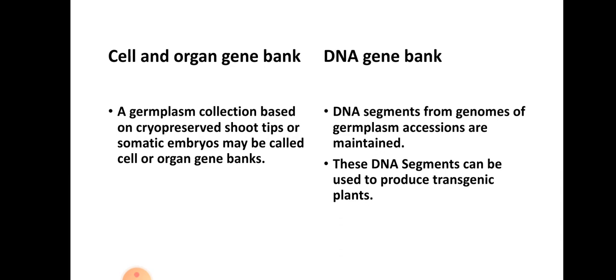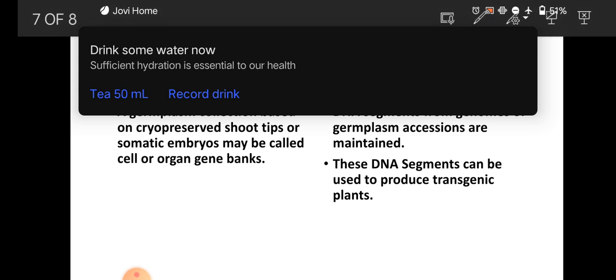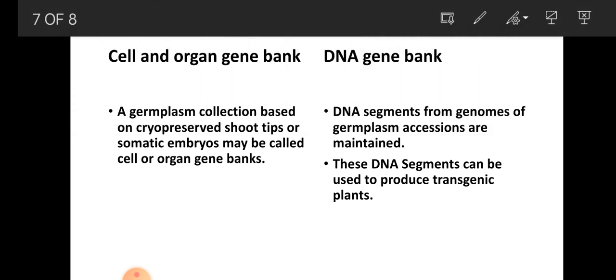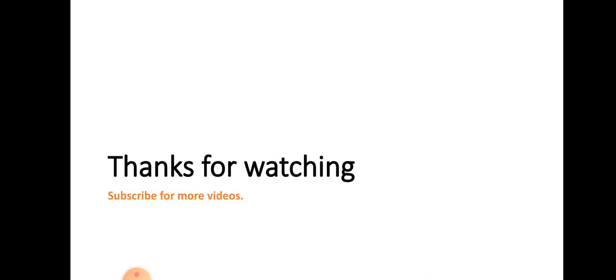In DNA gene banks, DNA segments from the genomes of germplasm accessions are maintained. These may be pure DNA, phage lysates, or cosmid clones. These DNA segments can be used in the future for the production of transgenic or genetically modified crops. That is why DNA gene banks are beneficial. Thanks for watching, and please subscribe to the channel for more such videos.